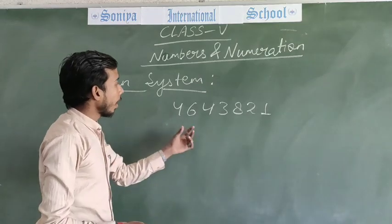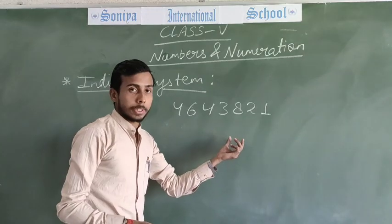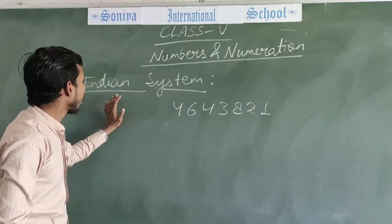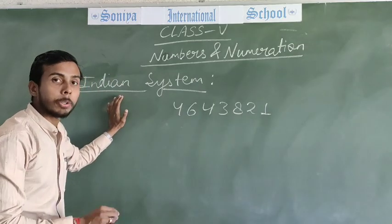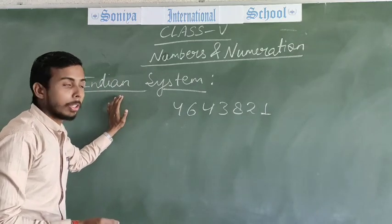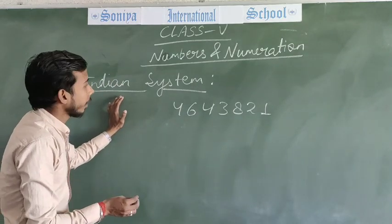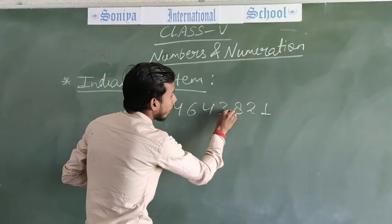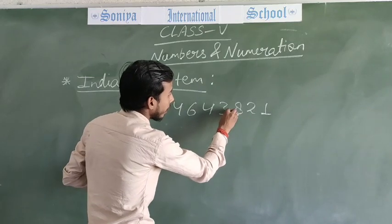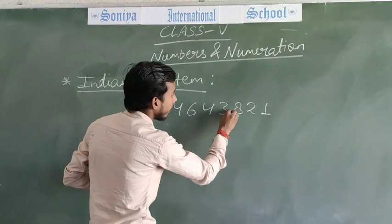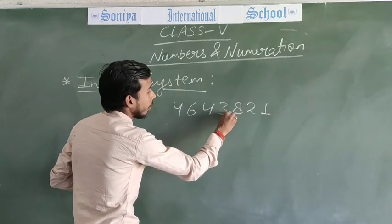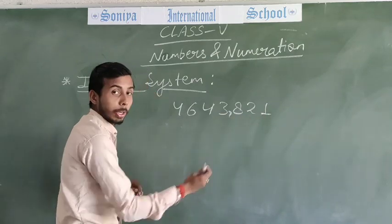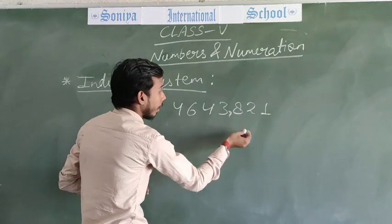First of all we have to put commas, clear? First of all we have to put commas according to the Indian system. What is the Indian system? First, put a comma after 3 digits from the right side — after 1, 2, 3 digits from the right side. Then in pairs of 2 digits.